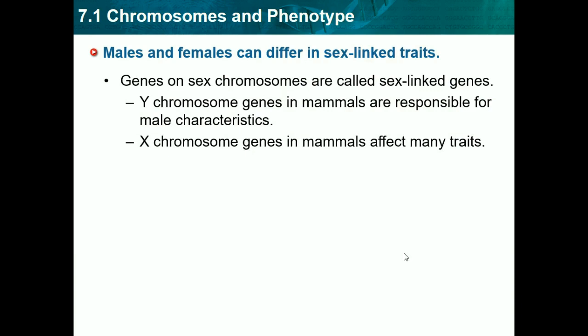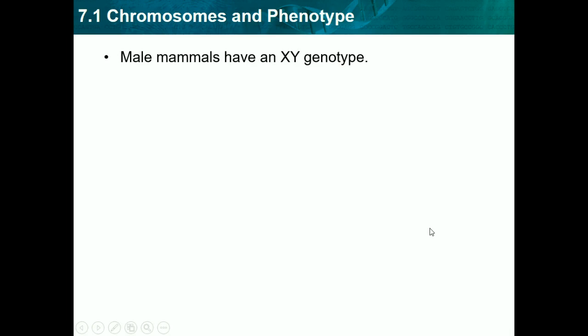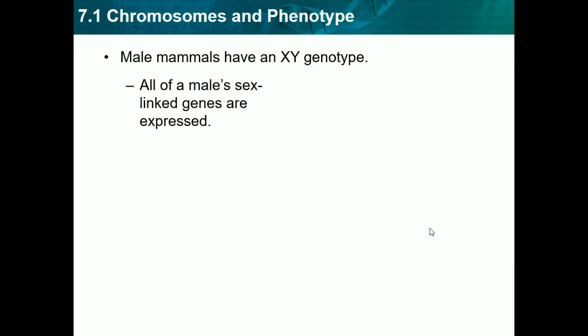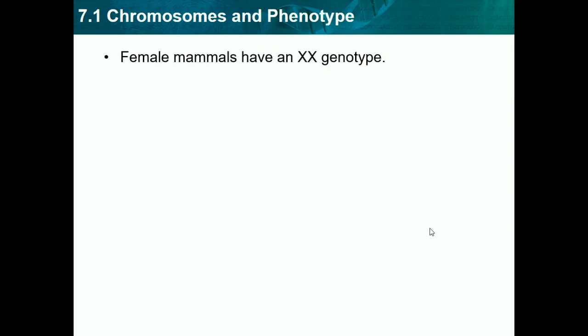X chromosome genes in mammals affect many traits because both sexes carry them. This Punnett square between a female and a male shows that the chances of having a male or female offspring are both 50-50. Male mammals have an XY genotype, with one X and one Y chromosome. All of the male sex-linked genes are expressed, because with only one of each, they don't need to match up with another copy.